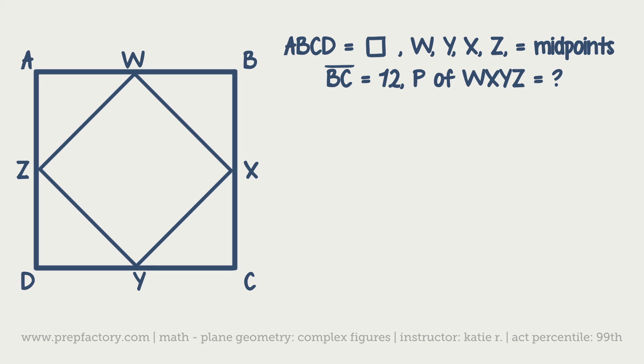First things first, let's go and write down the information that we know. We know that BC is equal to 12 units, and we also know that because X is a midpoint, both of these will be 6. We actually know since this is a square...